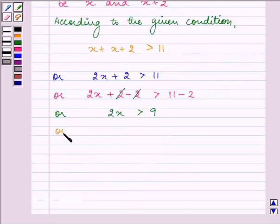On dividing both sides by positive 2, we have 2x divided by 2 is greater than 9 divided by 2, which gives us that x is greater than 4.5.